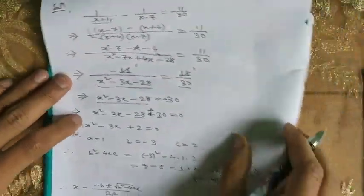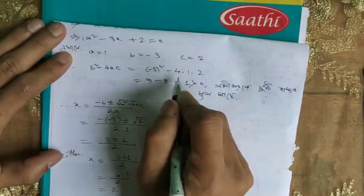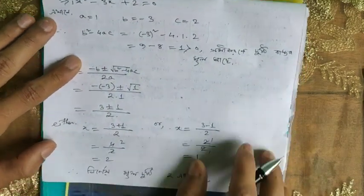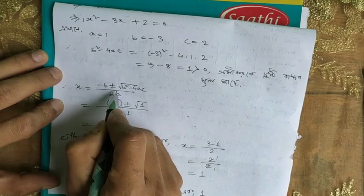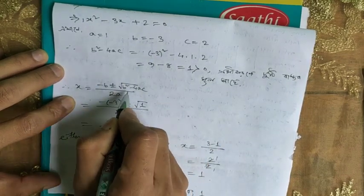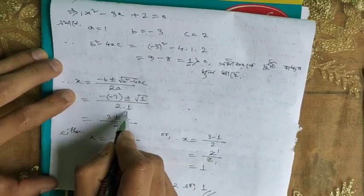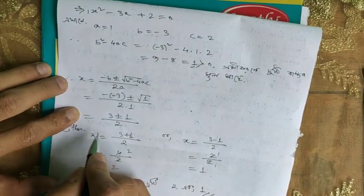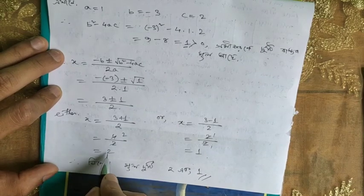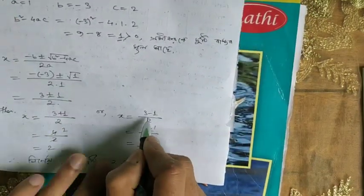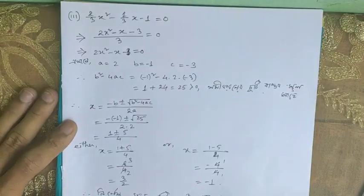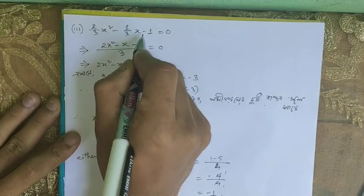We check with b equals minus 3. So discriminant: b squared minus 4ac gives minus 3 squared minus 4 into 1 into minus 2, which is 9 minus 8. Then x equals minus 3 plus 1 divided by 2, giving either x equals (3 plus 1) by 2, which is 4 by 2 equals 2, or x equals (3 minus 1) by 2, which is 2 by 2 equals 1.